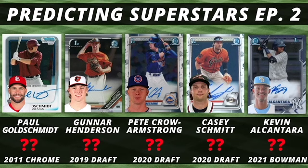In every episode of Predicting Superstars, I choose one past or present MLB superstar, one MLB rookie, and three MLB prospects to run through my formulas. Today we will be taking a look at 2022 NL MVP Paul Goldschmidt, MLB's number one prospect Gunnar Henderson, two top Cubs prospects Pete Crow Armstrong and Kevin Alconora, and finally a big sleeper in the Giants organization, Casey Schmidt. I will run all five players through the formula to see how they rank against my compiled data, as well as how they score on the all-time Predicting Superstars list.